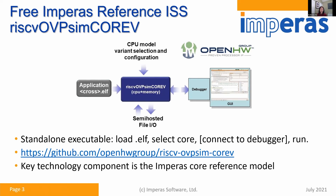This is a diagram of the free InParis reference ISS instruction set simulator. The name of it is RISC-V OVP-SIM Core 5. It models the CPU and memory. It's a standalone application, so you can load an ELF file, select the core, connect to the debugger, and execute the program. You can download it from the GitHub Open Hardware Group.